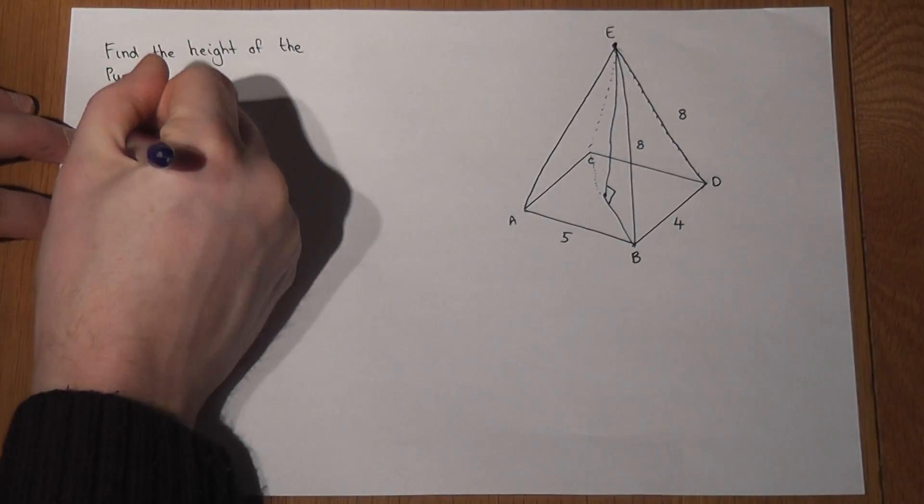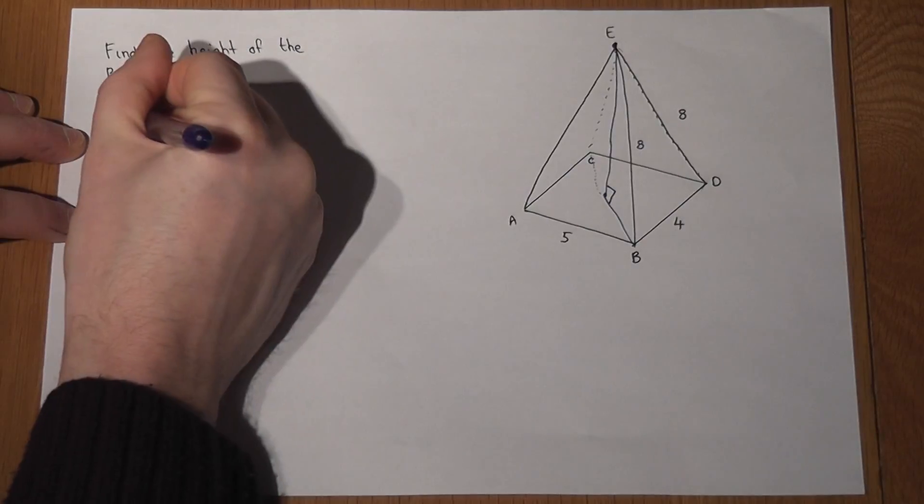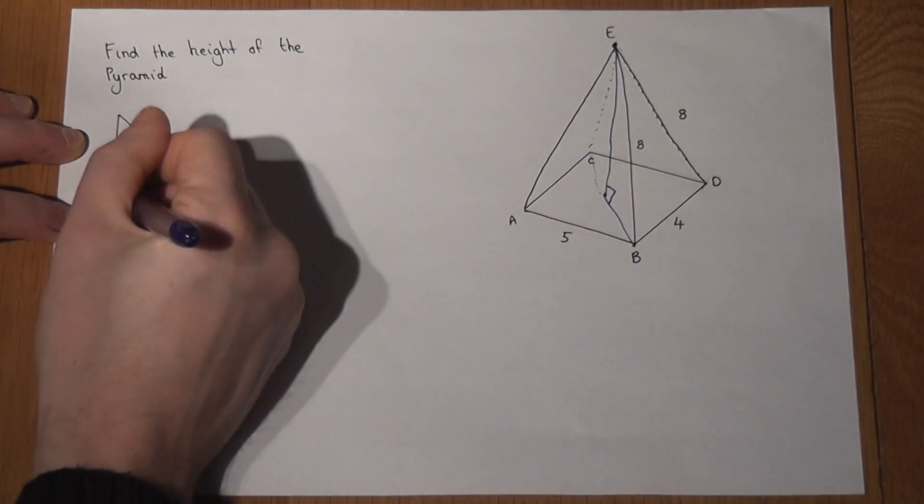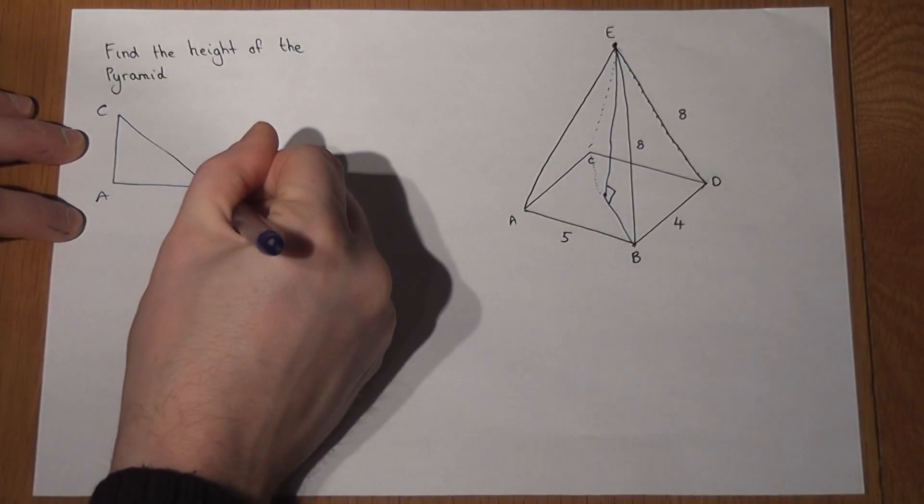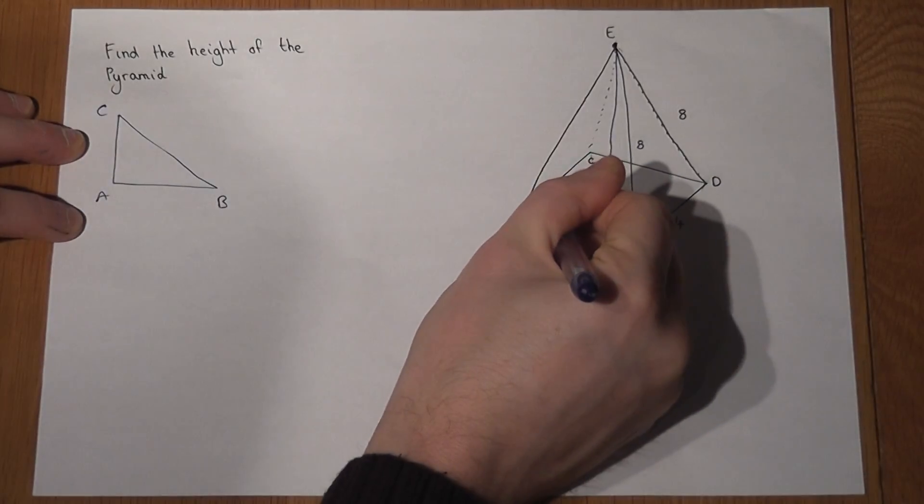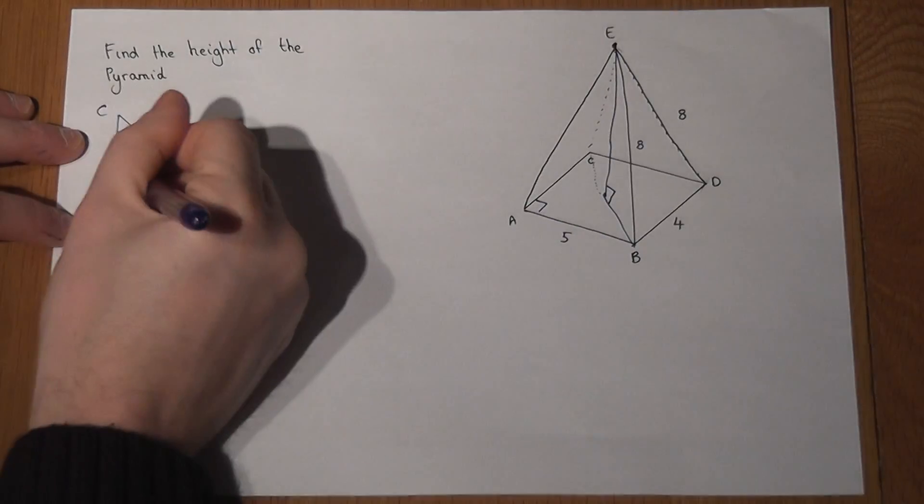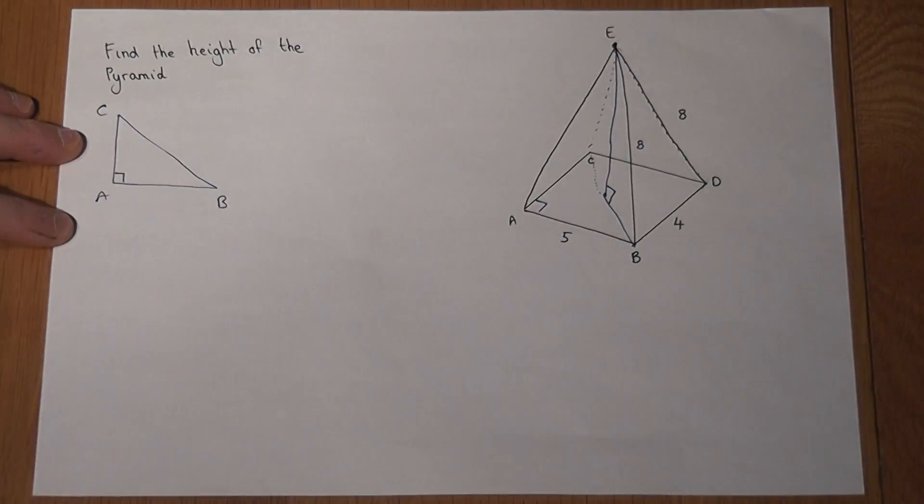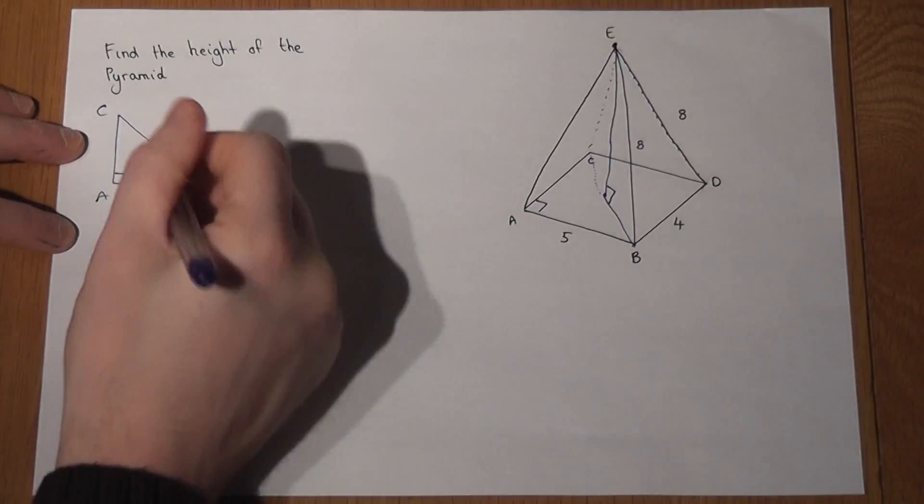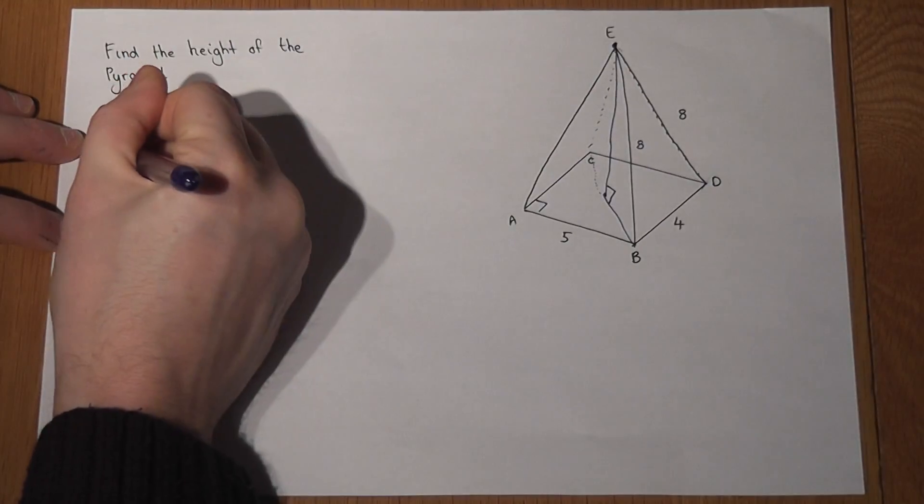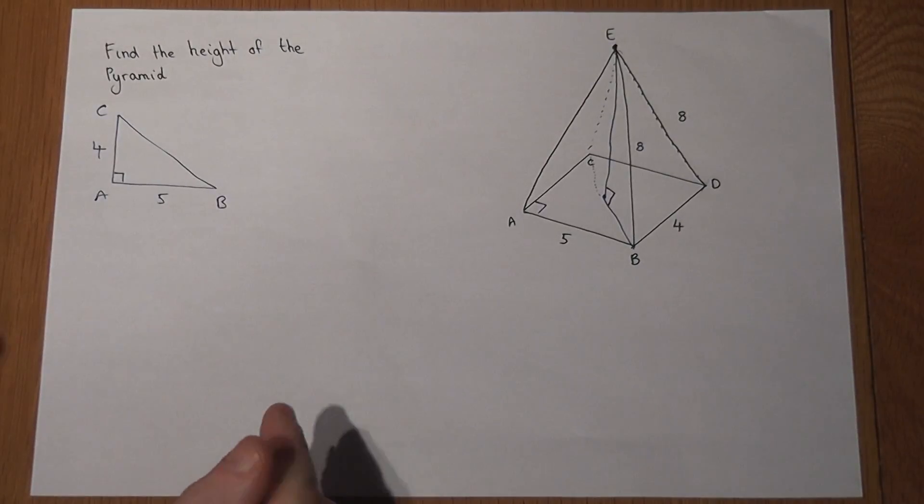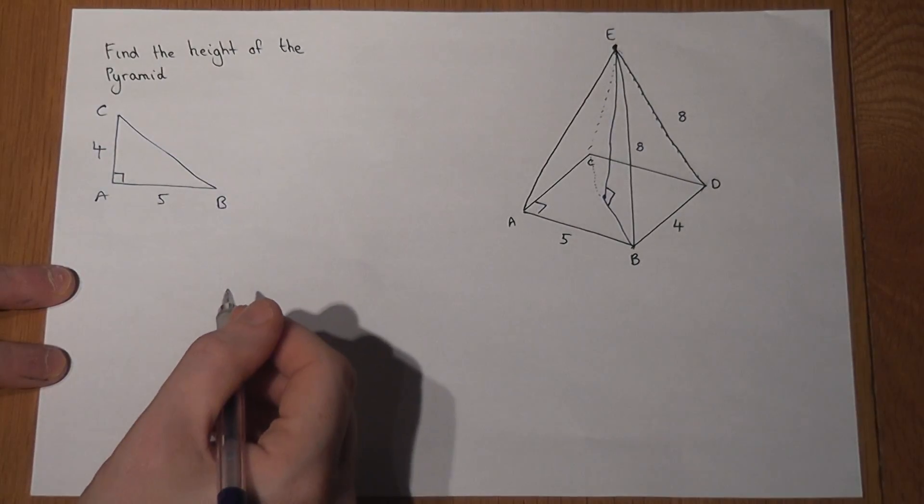A, C, and B. So there's my right angle there and here's my right angle here. I know that A to B is 5 and A to C must be 4, so I can find out this length here using Pythagoras.